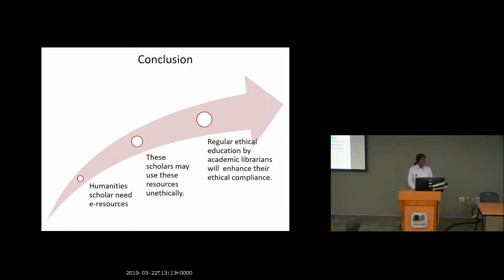In conclusion, humanities scholars need to use electronic information resources and they are expected to use them ethically. If they are not aware of the ethics of using these electronic information resources, they may be using them unethically. The academic librarians have a role to educate them in the proper way to use these electronic information resources, making them aware so they do not violate the ethics of using these information resources.